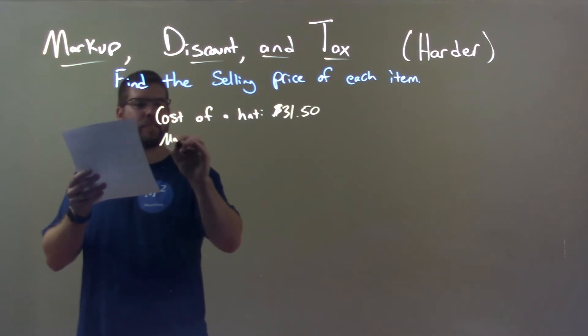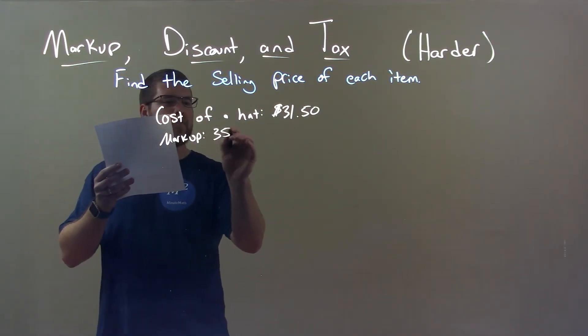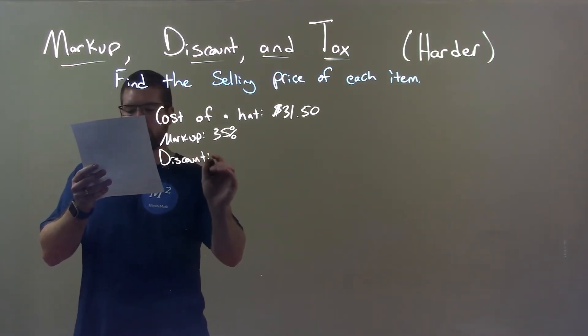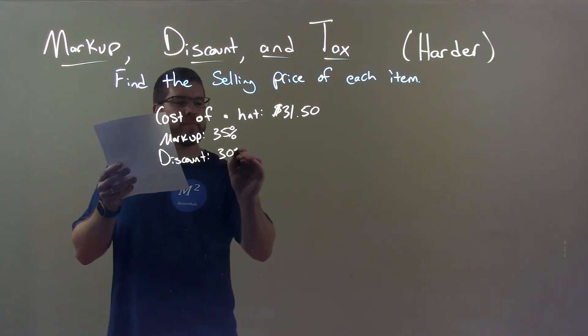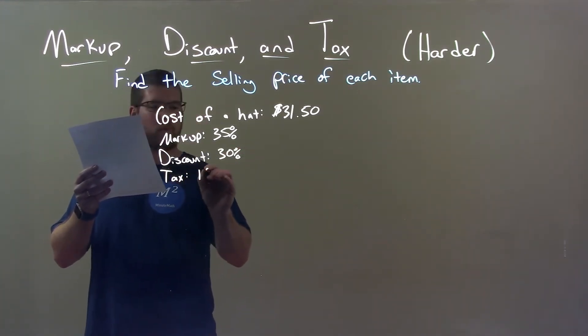Now, it's markup. It's markup is 35%. It's discount is 30% and its tax here is 1%.